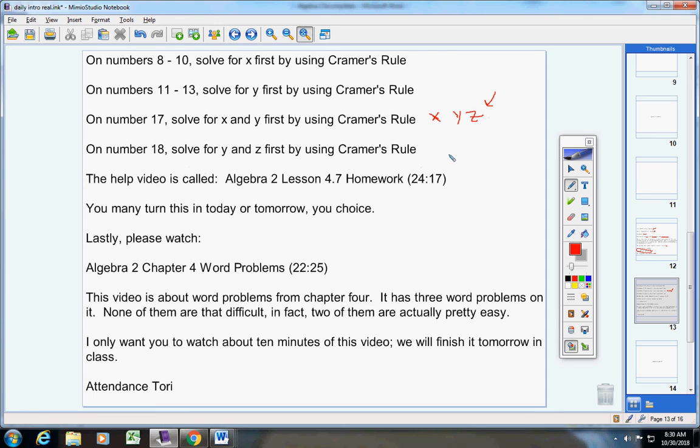Same thing for 18. It's a three variable system. So solve for Y and Z first by using Cramer's rule. And then solve for X by taking Y and Z and substituting them back in and finding X.